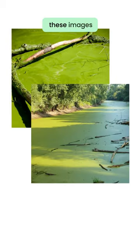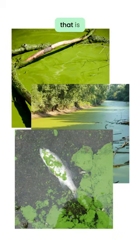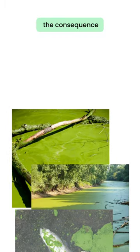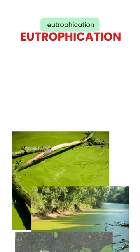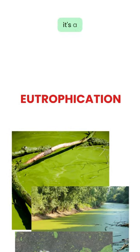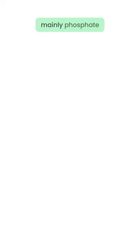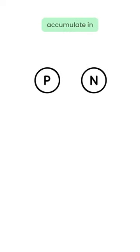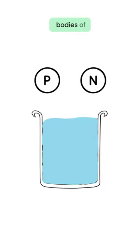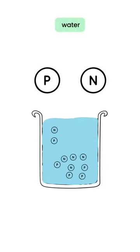Have you ever seen these images? That is the consequence of eutrophication. It's a process where nutrients, mainly phosphate and nitrate, accumulate in bodies of water.